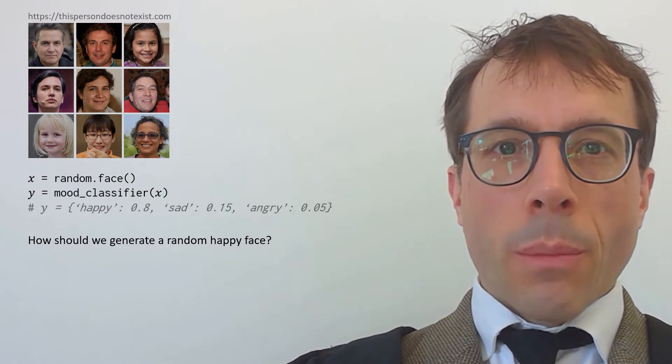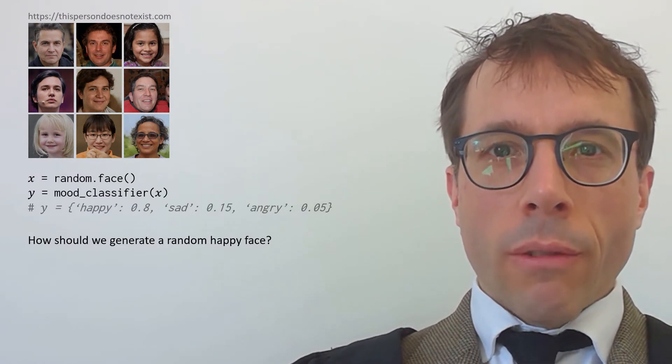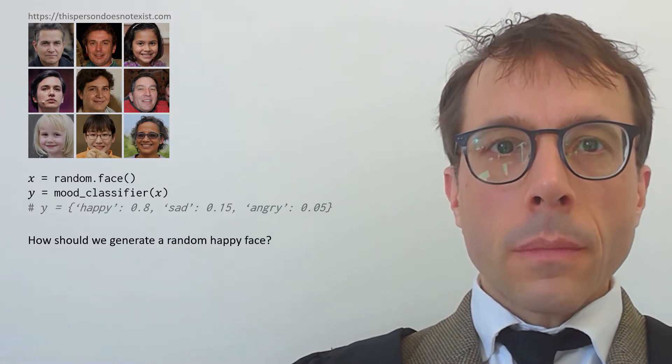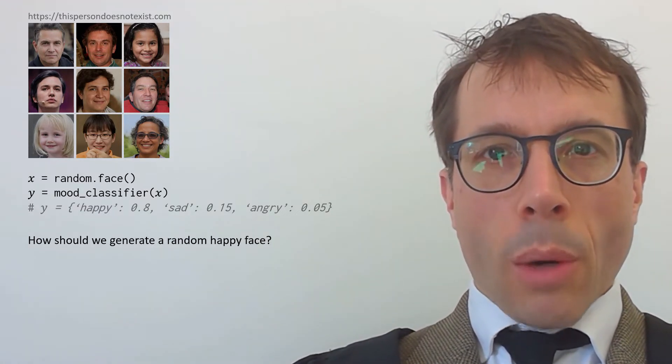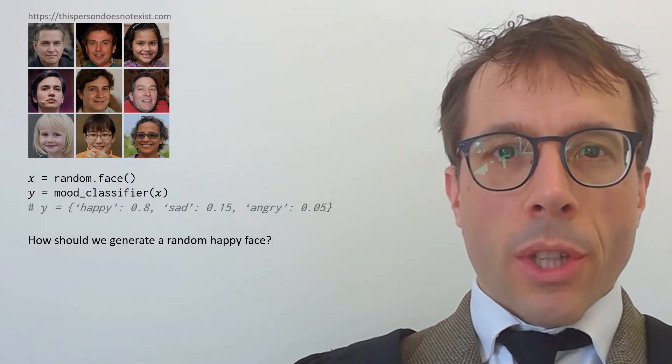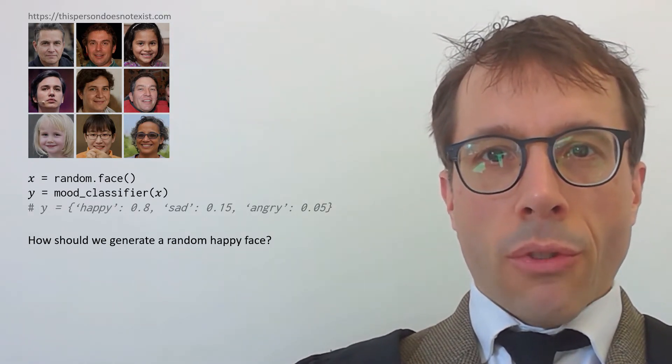Let's also suppose we have some neural network classifier which takes in a face and guesses the mood of the person. These sorts of classifiers usually return a set of probabilities. It might say, for example, I guess this face is happy with probability 80%, sad with probability 15%, and so on.